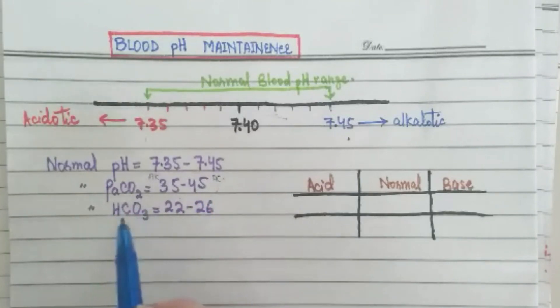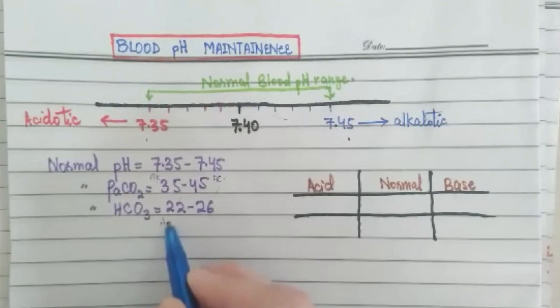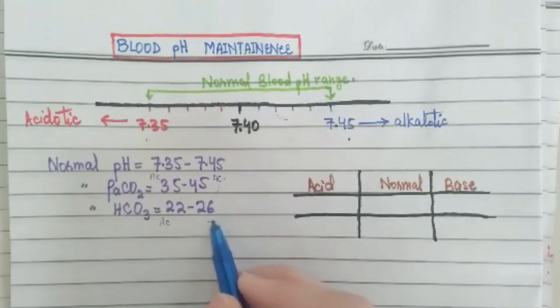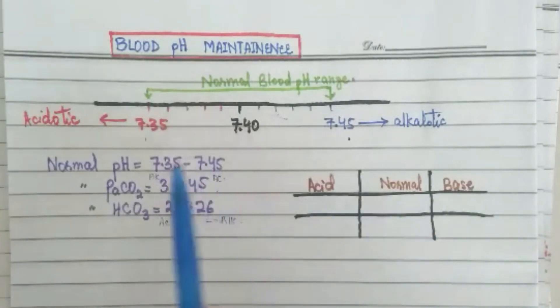And what else? Bicarbonate value is in the range of 22 to 26. This is like pH. If it is less than 22 then it will be on the acidotic side and if it is more than 26 then it will be on the alkalotic side. So we have to keep these values in our mind. Carbon dioxide partial pressure is 35-45, bicarbonate is 22-26, and pH is 7.35-7.45.